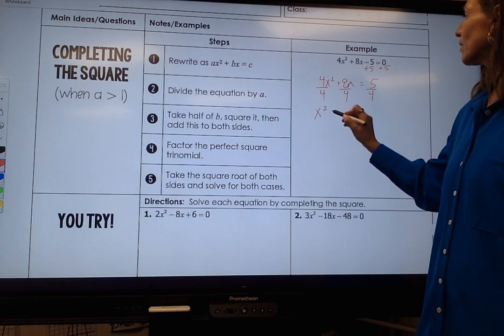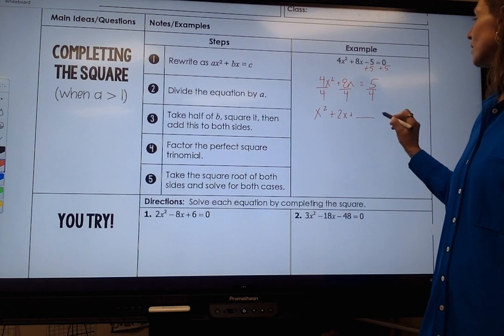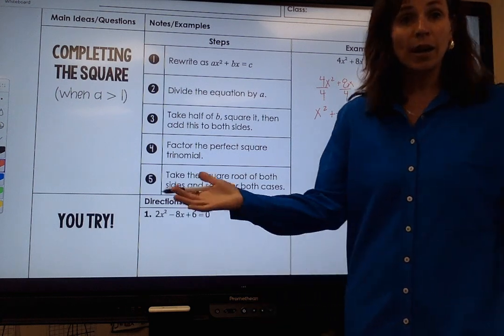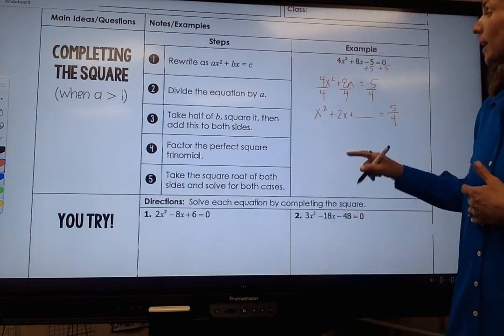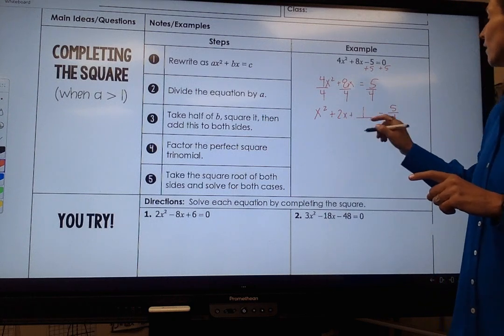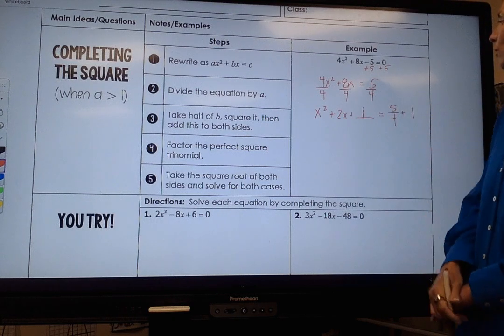And now I get x squared plus 2x. I'm going to leave myself space here and I get plus 5 over 4. And now I'm doing the same thing. I take this term divided by 2 which is 1 and then 1 squared is 1. If I add 1 over here, I add 1 over here.